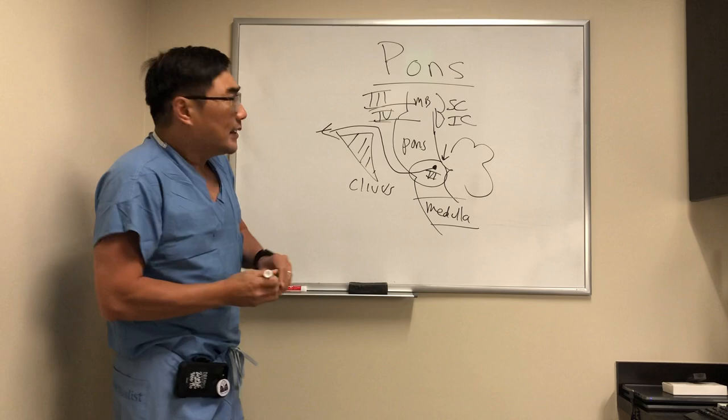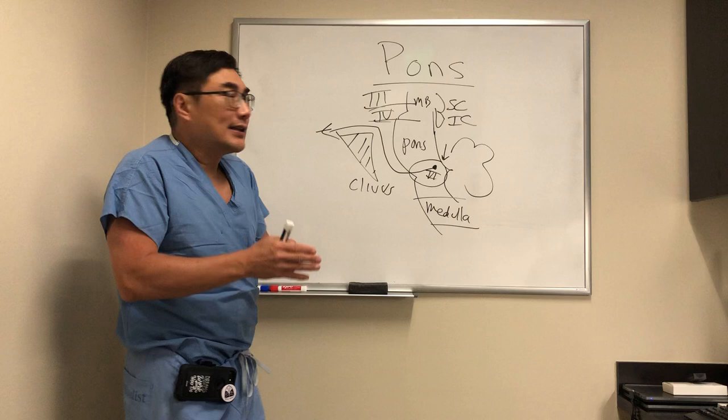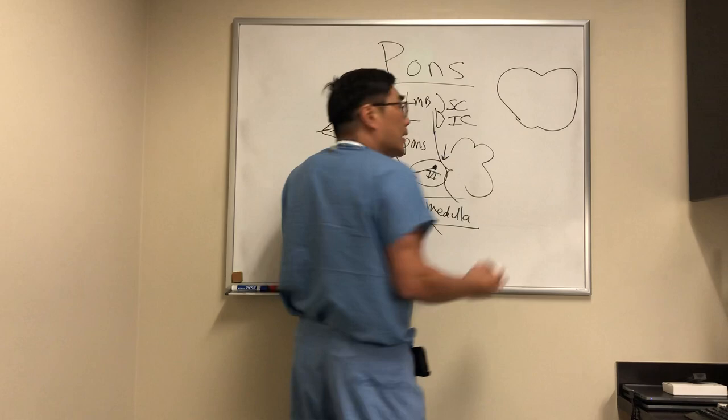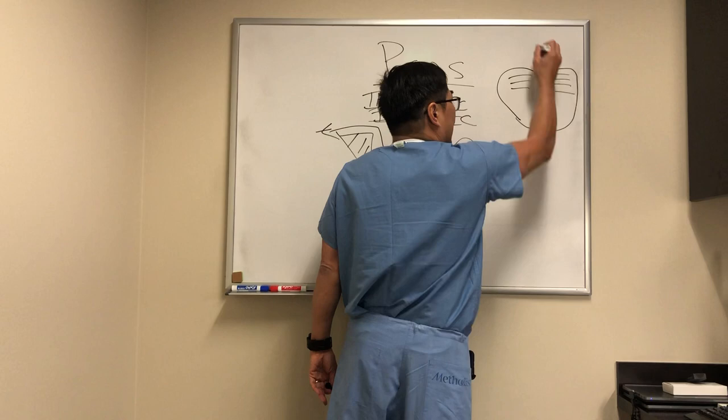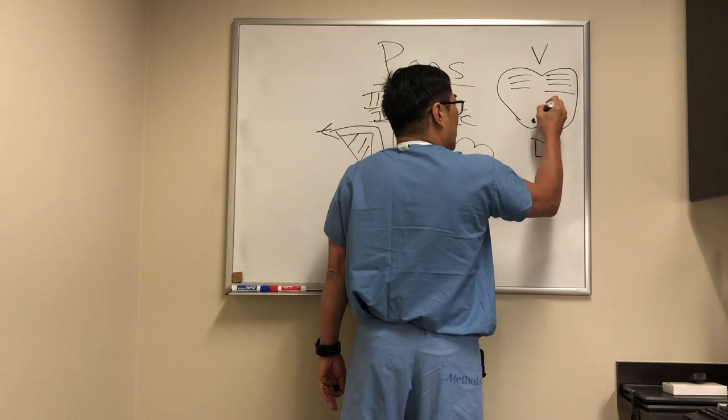Today we're focusing on this piece of the sixth nerve within the pons, because pontine syndromes can affect both the sixth nerve nucleus and the sixth nerve fascicle, as well as the interneuron between the sixth nerve nucleus and the third nerve — the medial longitudinal fasciculus. When we have pontine lesions, we can be dealing with ventral or dorsal lesions. You're familiar with the dorsal midbrain syndrome, but these are dorsal pontine syndromes.